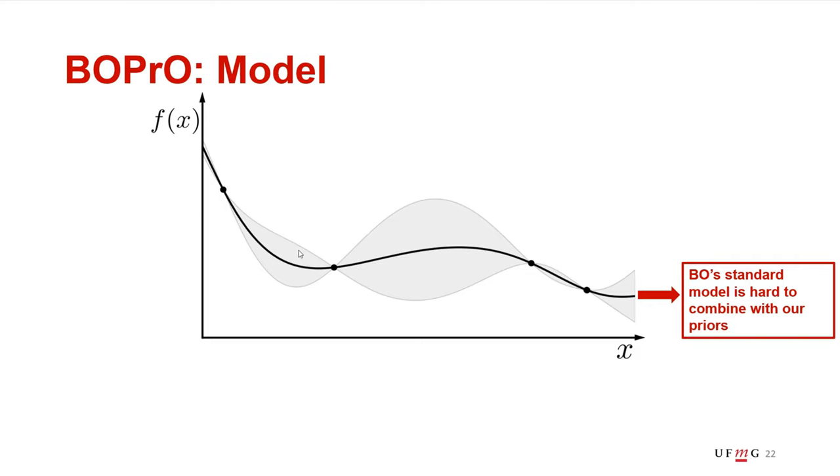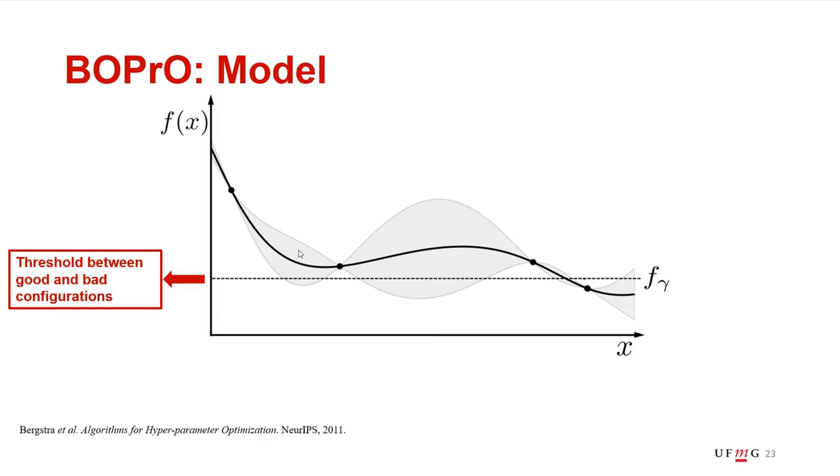So in BOPrO, we use a slightly different model that actually predicts the probability of a point being good. To do that, we first have to define what is a good point in the eyes of the model. To do that, we use an idea similar to that of the TPE of Bergstra et al., and we define a threshold on what are good and bad points. Basically, points with a function value below the threshold are considered good, and points with function value above the threshold are considered bad. With that, we have a simple definition of good and bad points for our model.